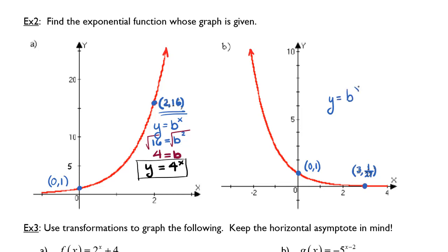Therefore, I will use the generic formula y equals b to the x. Substituting x in as 3, I'll get b to the 3rd equals 1 over 27. If I take the cube root of both sides to undo the exponent of 3, b equals 1 third. So I can rewrite the standard exponential function for this curve as y equals 1 third raised to the x.